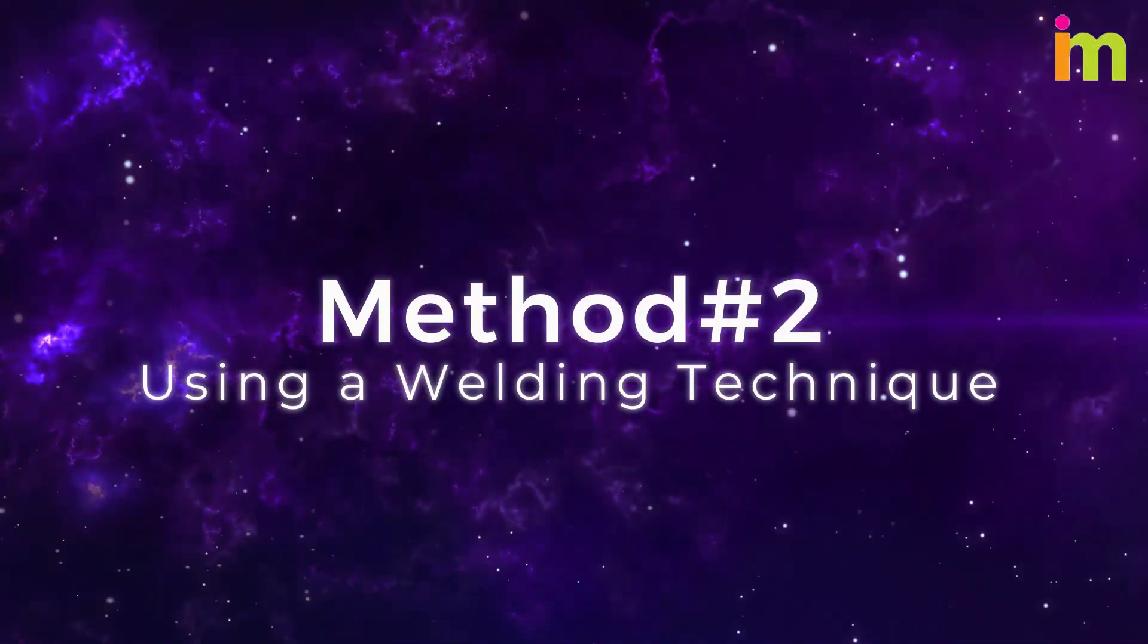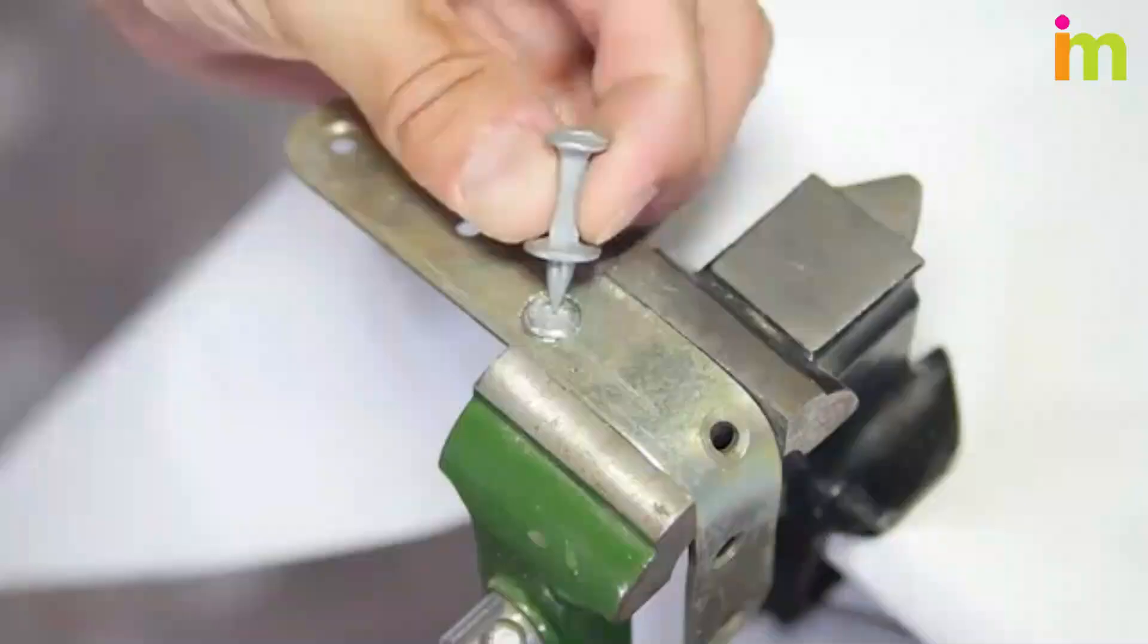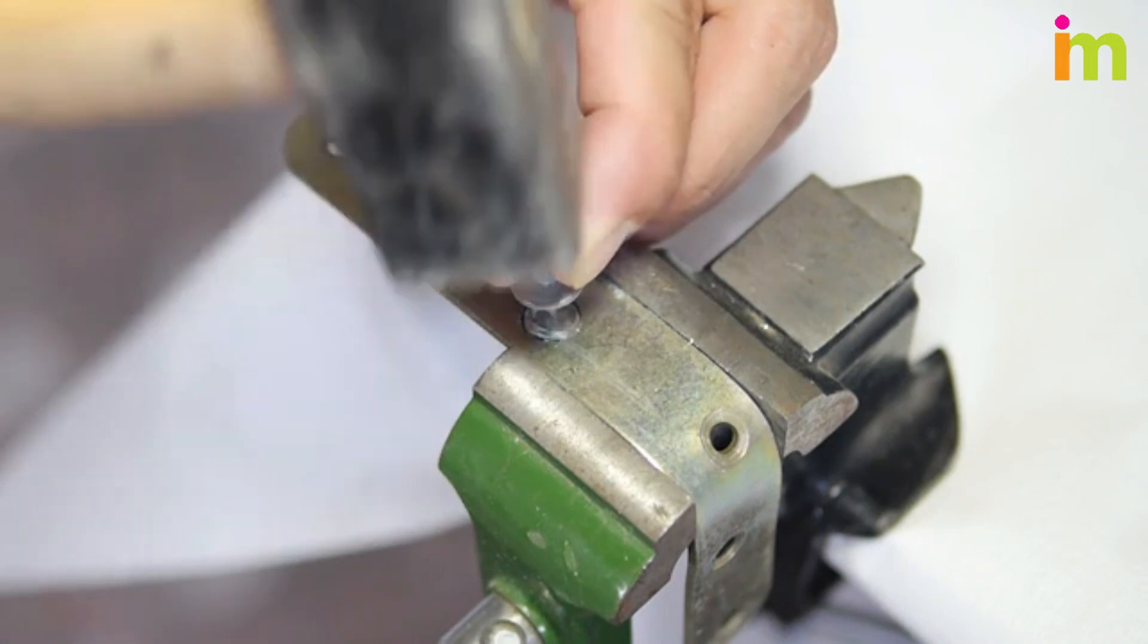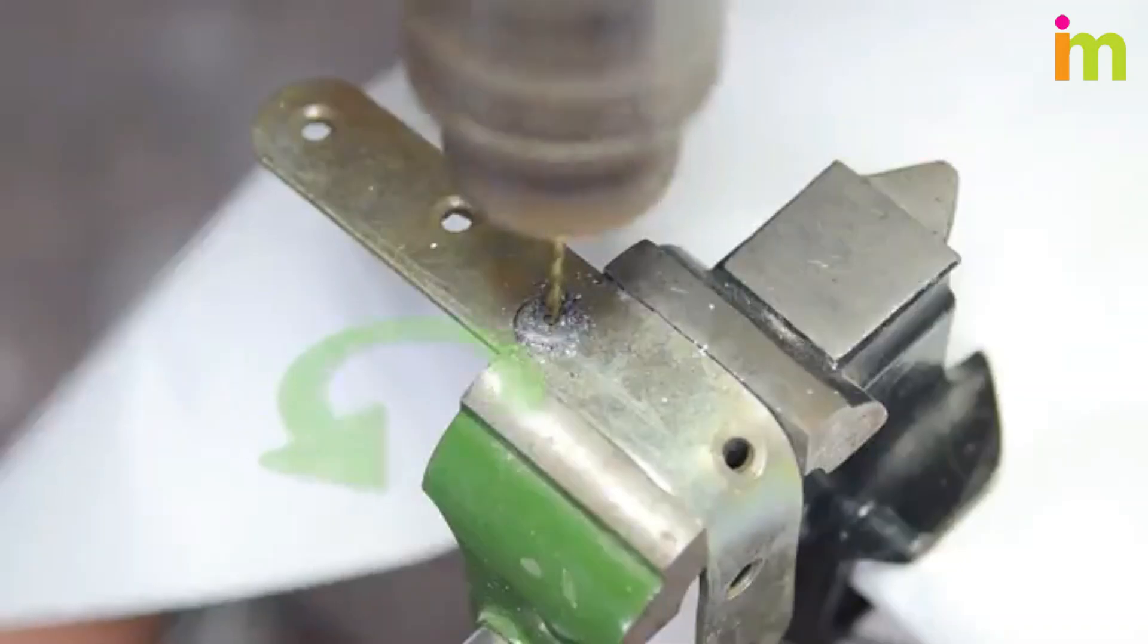Method number two: using a welding technique. Center punch the broken bolt as close to the center as possible. Drill out the center of the bolt. Use a bit that is roughly one quarter the diameter of the bolt and drill it out.